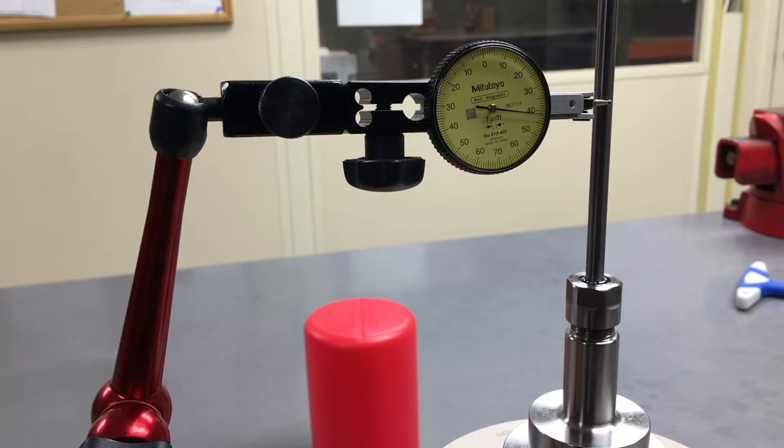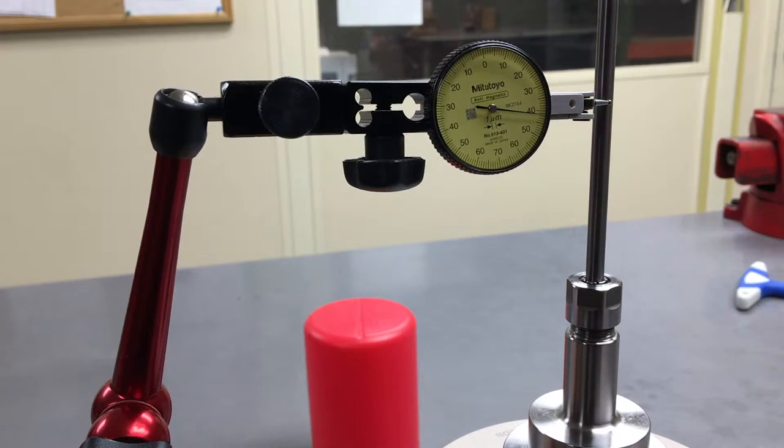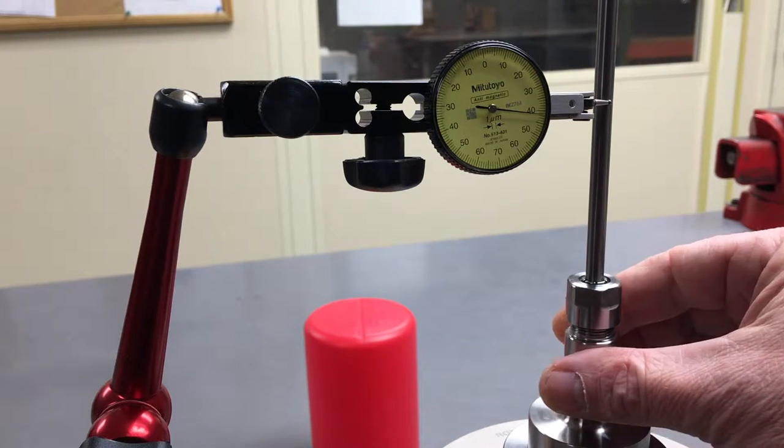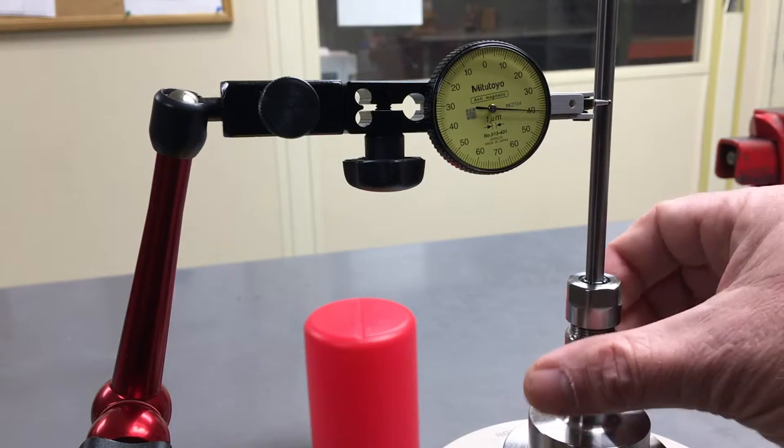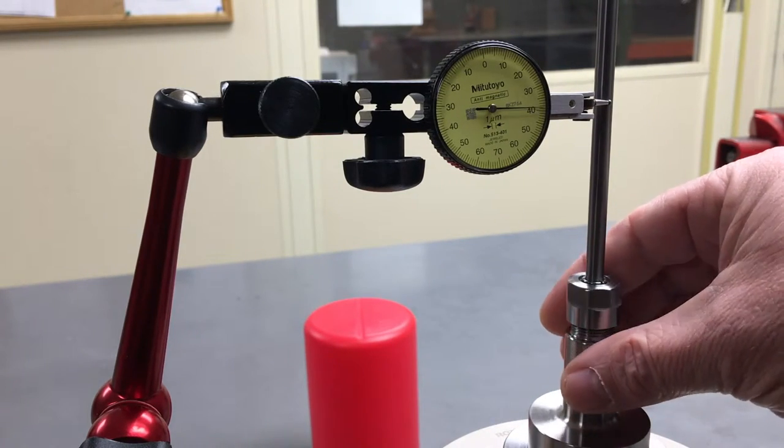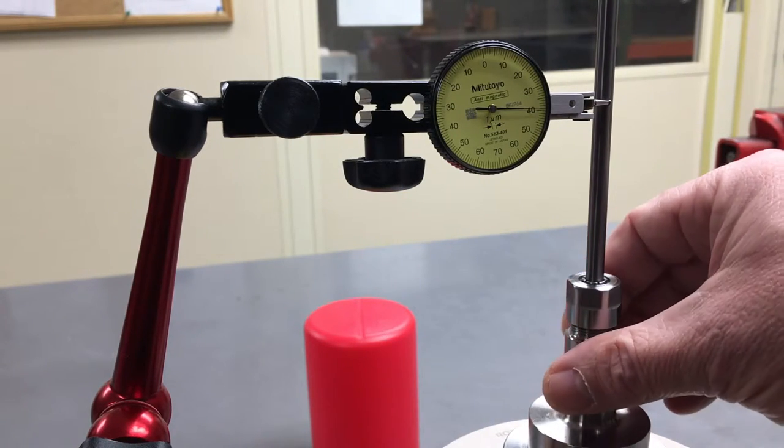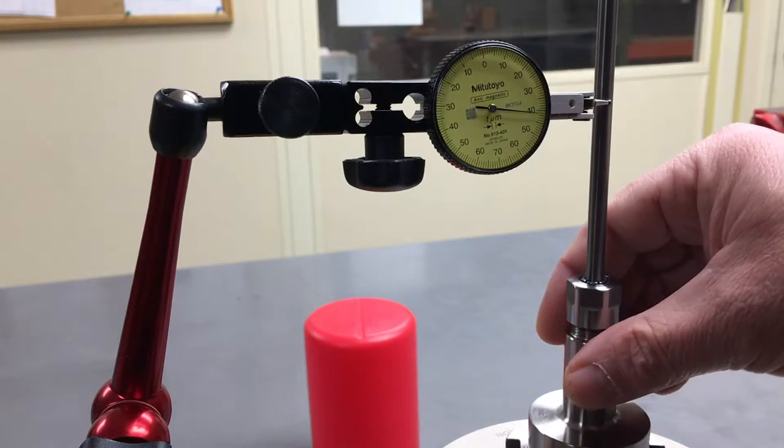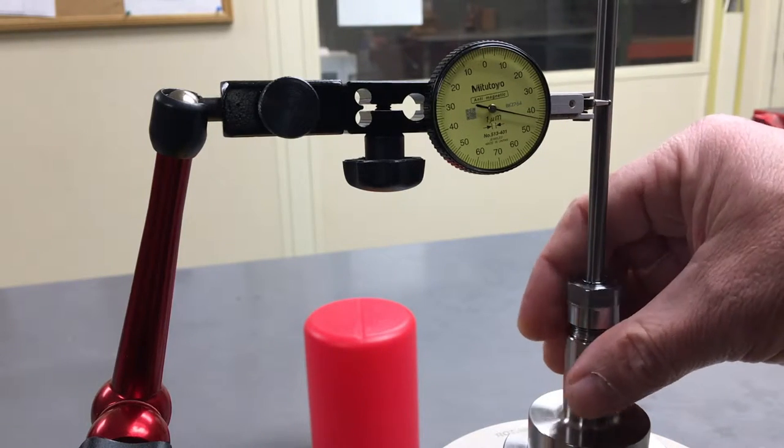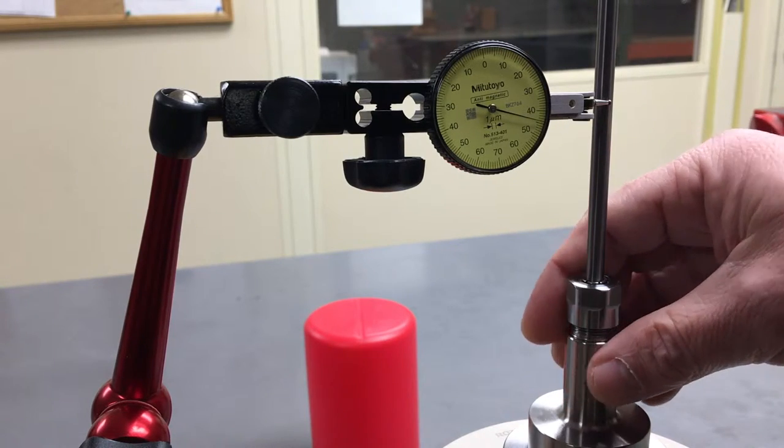I have an ultra precision collet at 4 times diameter - it checks 3 microns. At 10 times diameter, this is a micron indicator going from 39 to 44, so that's 5 microns runout at 10 times diameter.